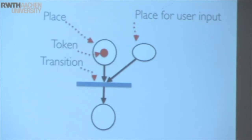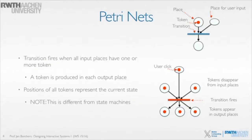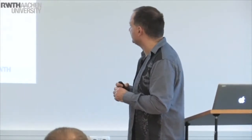If you paid attention, that means tokens can disappear or magically multiply. If you put two tokens into two input places, those two get consumed by the transition and only one gets placed into the outgoing place. So a transition fires when all input places have one or more tokens, and that produces a token in each output place. The position of all the tokens in combination represents the current state — very different from the state machine.